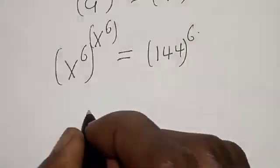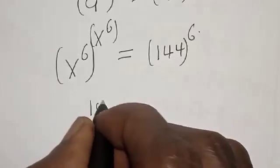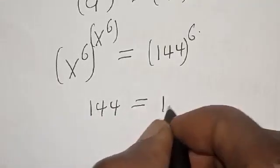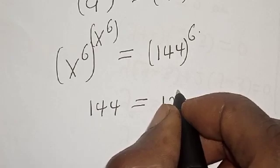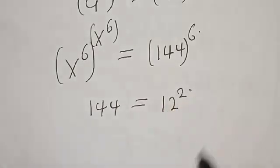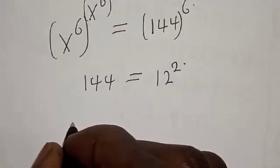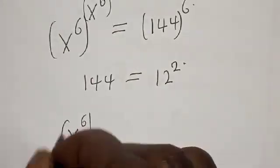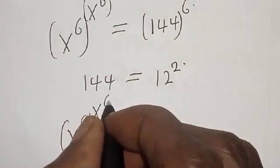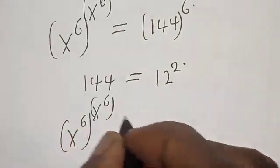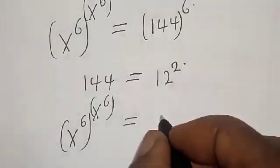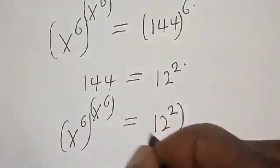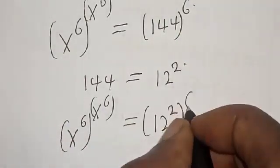Now remember that 144 is equal to 12 squared, so the right-hand side becomes 12 squared raised to the power of 6, which gives 12 raised to the power of 12.